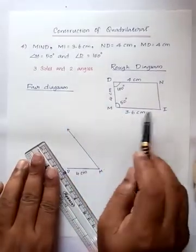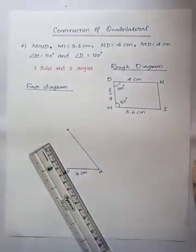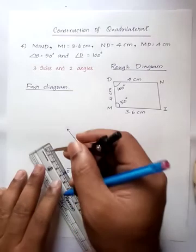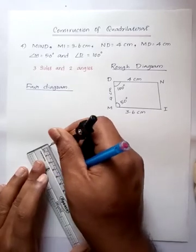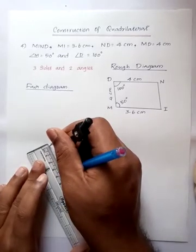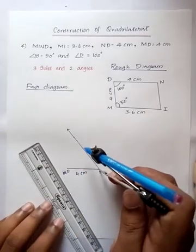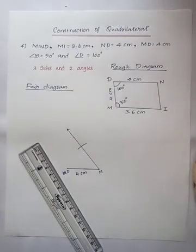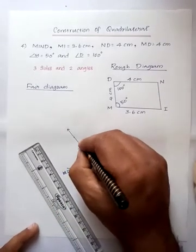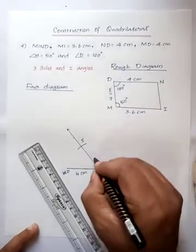Next, from M on the angle line, mark point I at distance 3.6 centimeter. So, using compass to measure 3.6 centimeter, cut the line at point I. D, M, I - this is 3.6 centimeter.